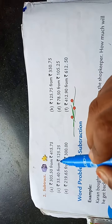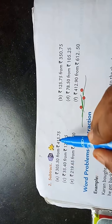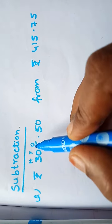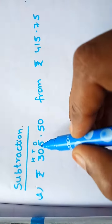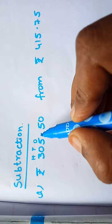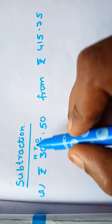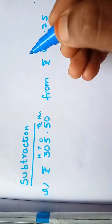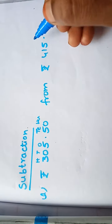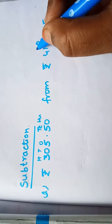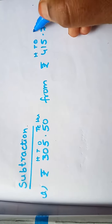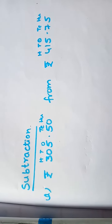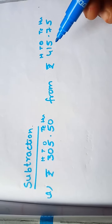Let us see the first sum. I have already written the first sum with the place values. Before the decimal point we have: ones, tens, hundreds. After the decimal point we have: tenths, hundredths. Write the place values in the same way here — ones, tens, hundreds before the point, and tenths, hundredths after the point. In subtraction, we always write the big number first, then the small number.